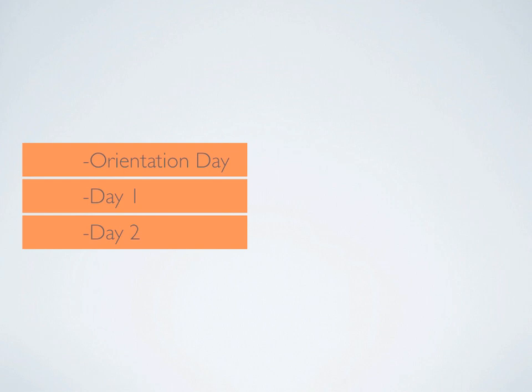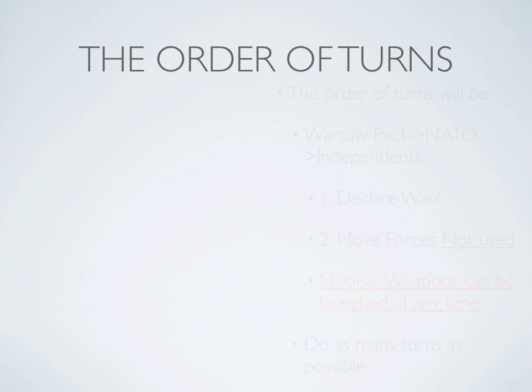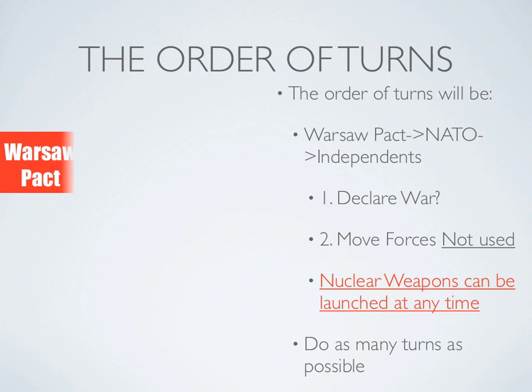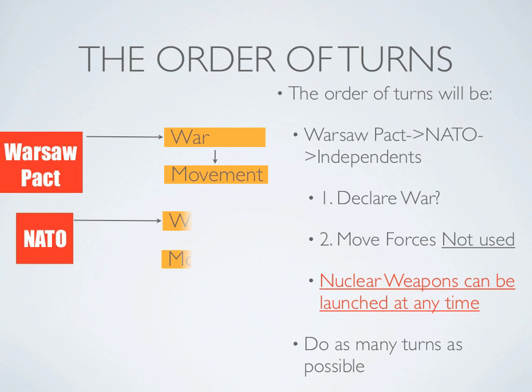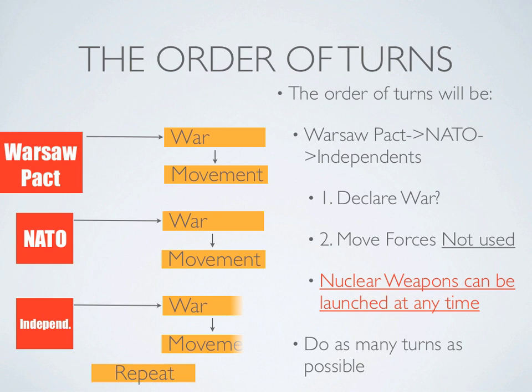The time frame for this simulation is approximately three days. On day one, the instructor explains all facets of the simulation. On day two, students take over to see if peace can be reached or Armageddon ensues. The order of turns starts with the Warsaw Pact, followed by NATO and the Independents. The Warsaw Pact decides whether to declare war first, then moves unused forces. NATO and the Independents follow the same sequence. You do not have to wait until your turn to launch nuclear weapons. Depending on time, we will try to get in as many turns as possible.